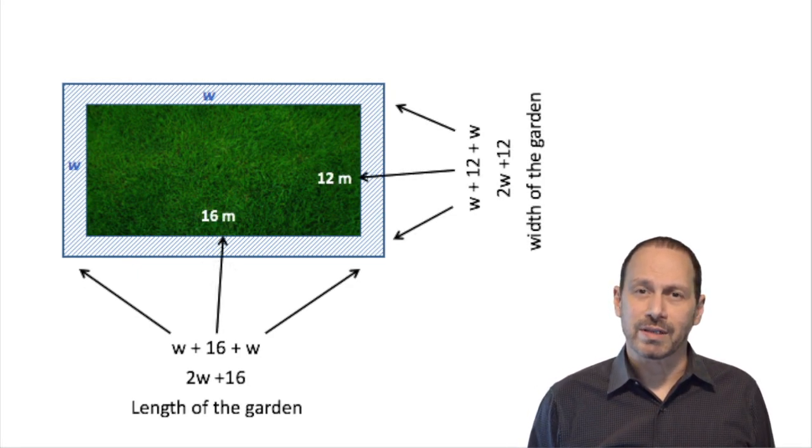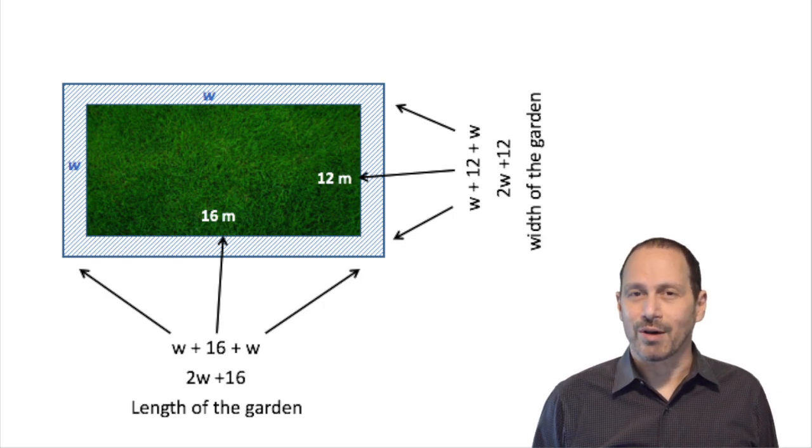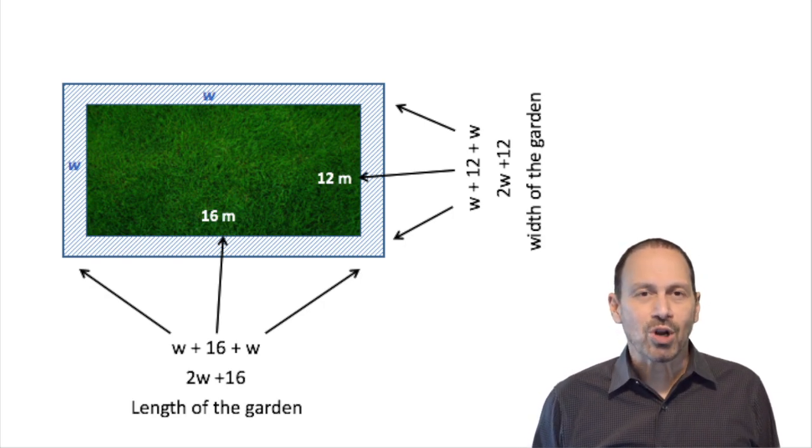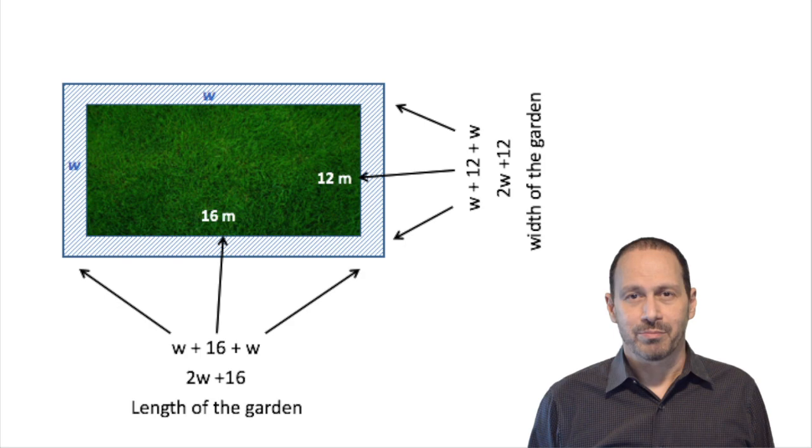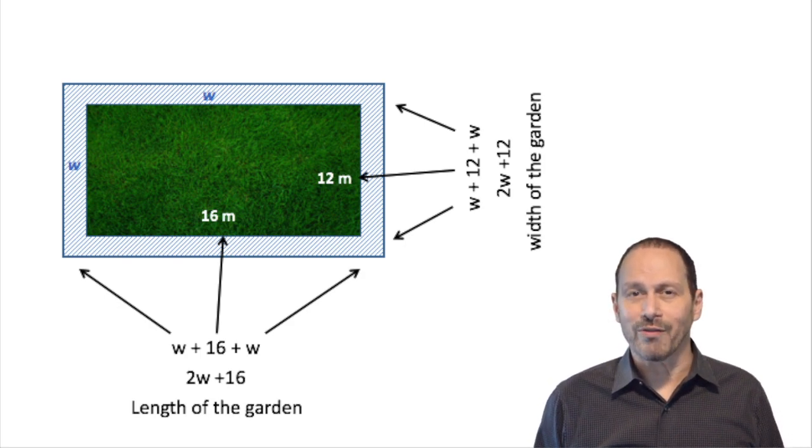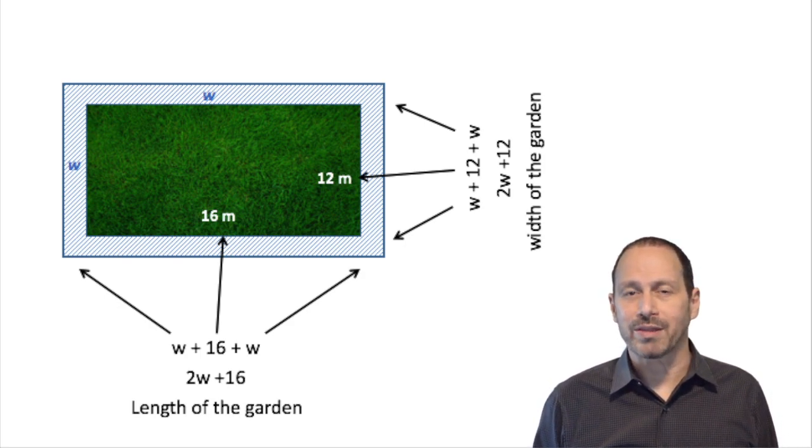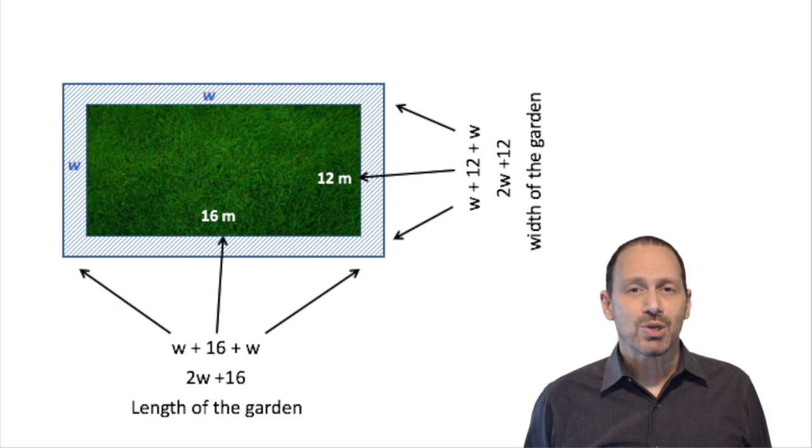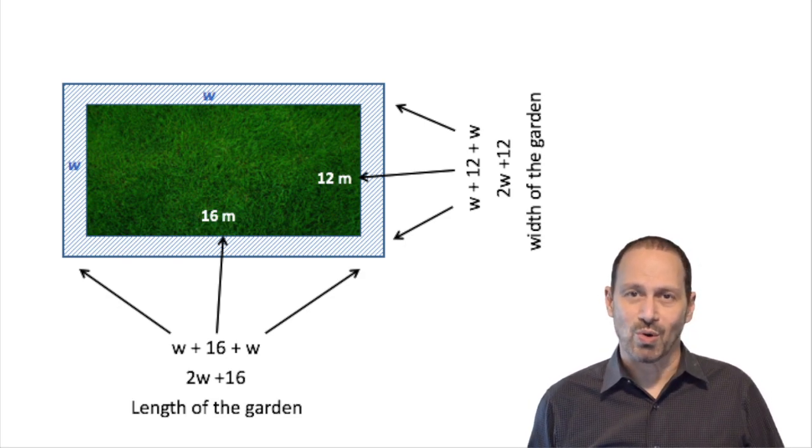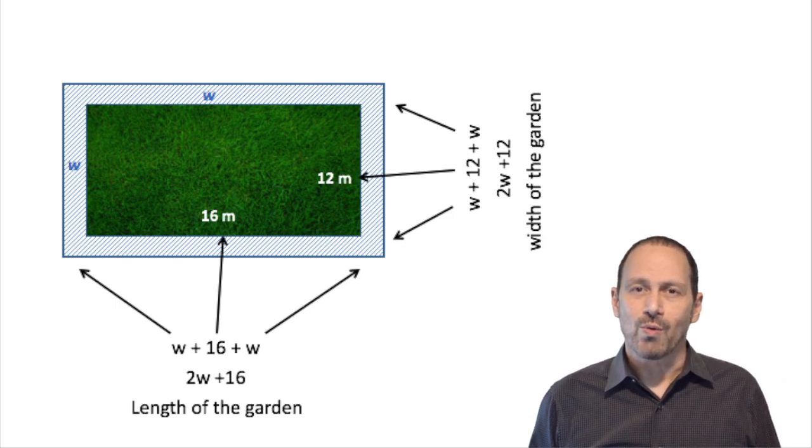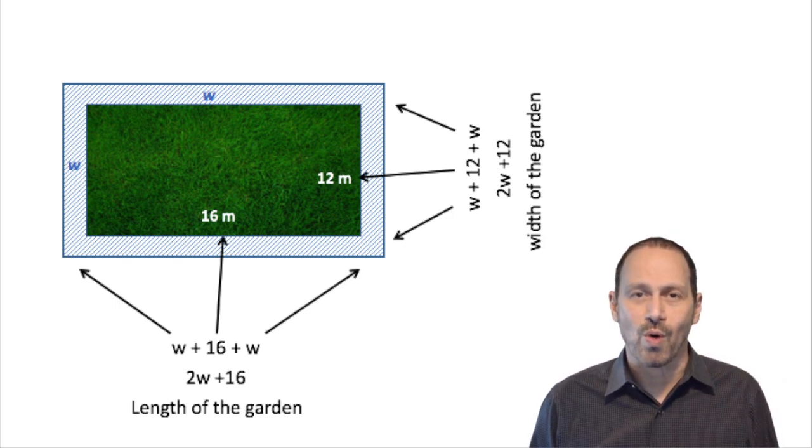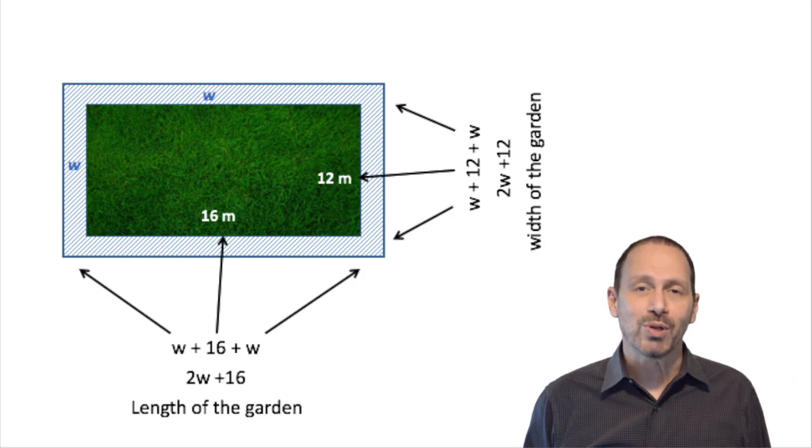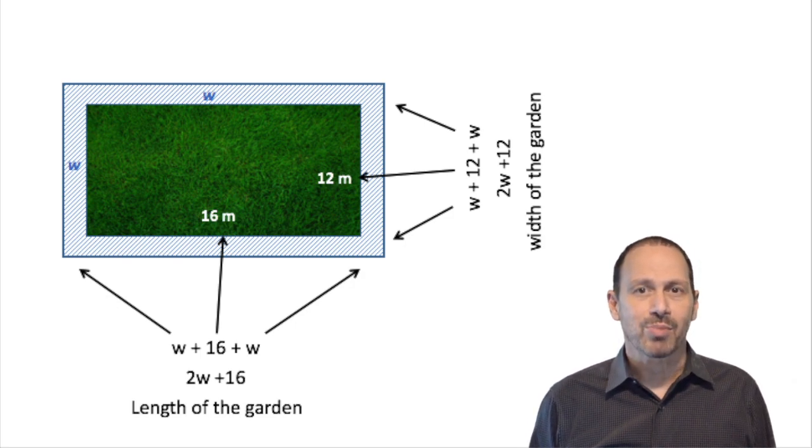Now let's move our attention to the width of the garden. We start with 12 meters, but again, to those 12 meters we have to add the width of the pathway, which is represented by W. So because the pathway goes all the way around, we have to add it twice. So we have W plus 12 plus W.